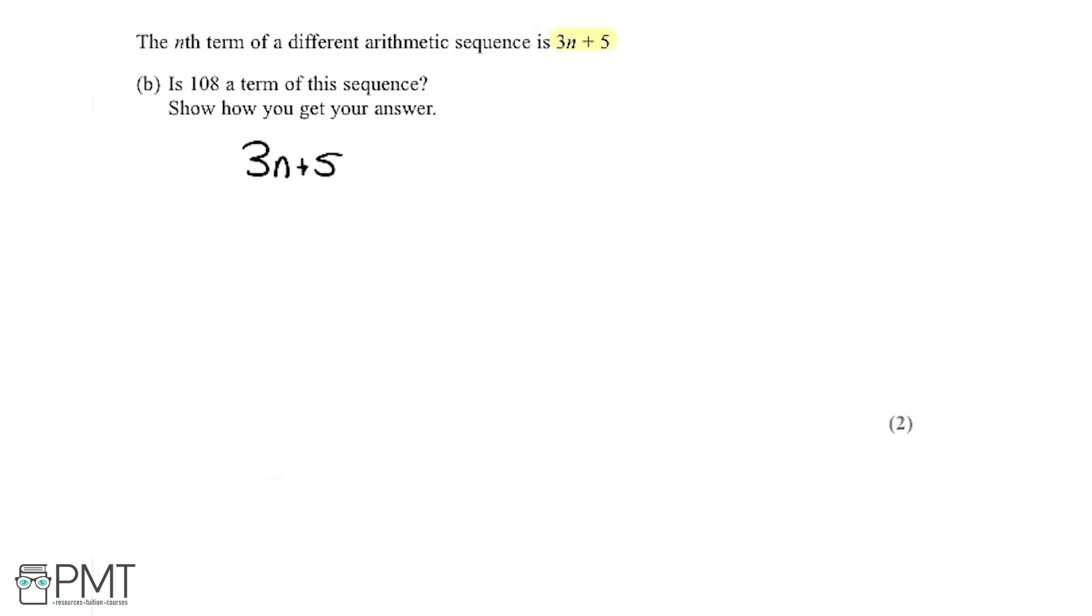So what I'm going to do is start off by assuming that 108 is a term. So 3n plus 5, if 108 is a term, from that we'll be able to get 108. There'll be some value of n that we're subbing here which will get us to 108. I'm going to try and work out what that value is, so I'm going to solve this equation. We've got 3n equals 108 minus 5, so 3n is 103. If I divide both sides by 3, we'll have n equals 103 divided by 3. And because this is a calculator paper, we can do that. If you put it into the calculator, we find out that that is 34.3 recurring.